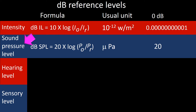When the dB reference level is pressure, we refer to it as sound pressure level, abbreviated as dB SPL. It is represented by the formula: dB SPL equals 20 times the logarithm of the ratio of the pressure output to the pressure reference. Later I will explain why 20 is used in the pressure equation and not 10 as in the intensity equation. The usual unit for sound pressure level is the micropascal, and 0 dB corresponds to 20 micropascals.